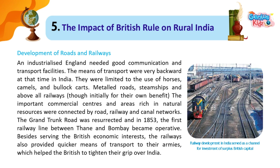The Grand Trunk Road was resurrected, and in 1853, the first railway line between Thane and Bombay became operative. Besides serving British economic interests, the railways also provided quicker means of transport to their armies, which helped the British to tighten their grip over India.